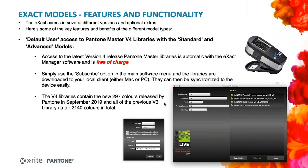As mentioned on previous webinars, with the latest firmware and exact manager software, the standard and advanced models get automatic access to the latest Pantone master libraries — these will be the coated and uncoated libraries that a lot of people are familiar with. It also includes the pastels and neons libraries as well. This is done through what we call default user access into our Pantone live cloud. You still have the option for a subscription-based access, but here you can access the latest version four libraries in digital format and put them straight onto your device. This includes all of the previous version three library data going back to 2016, plus all of the new 297 colors released in September last year.